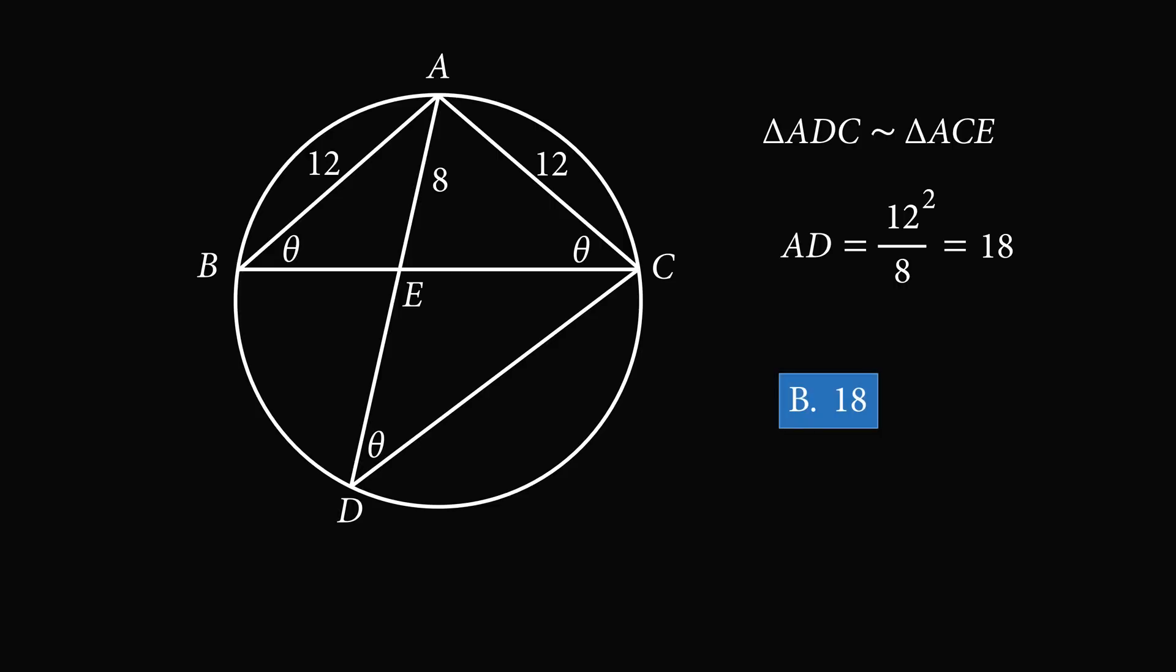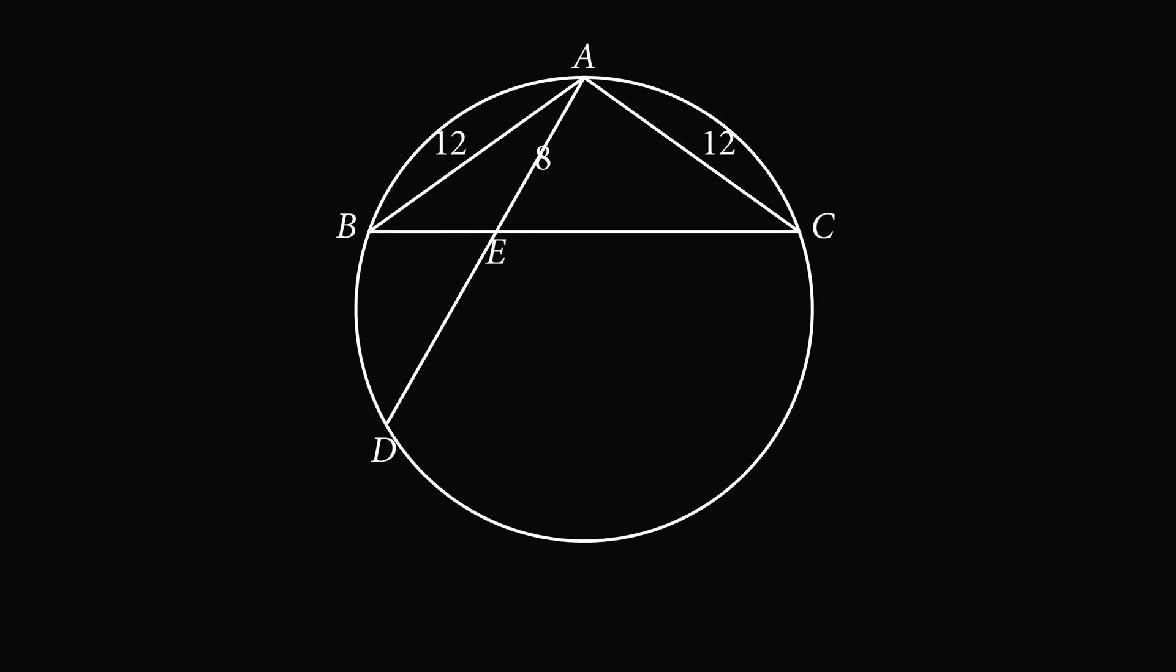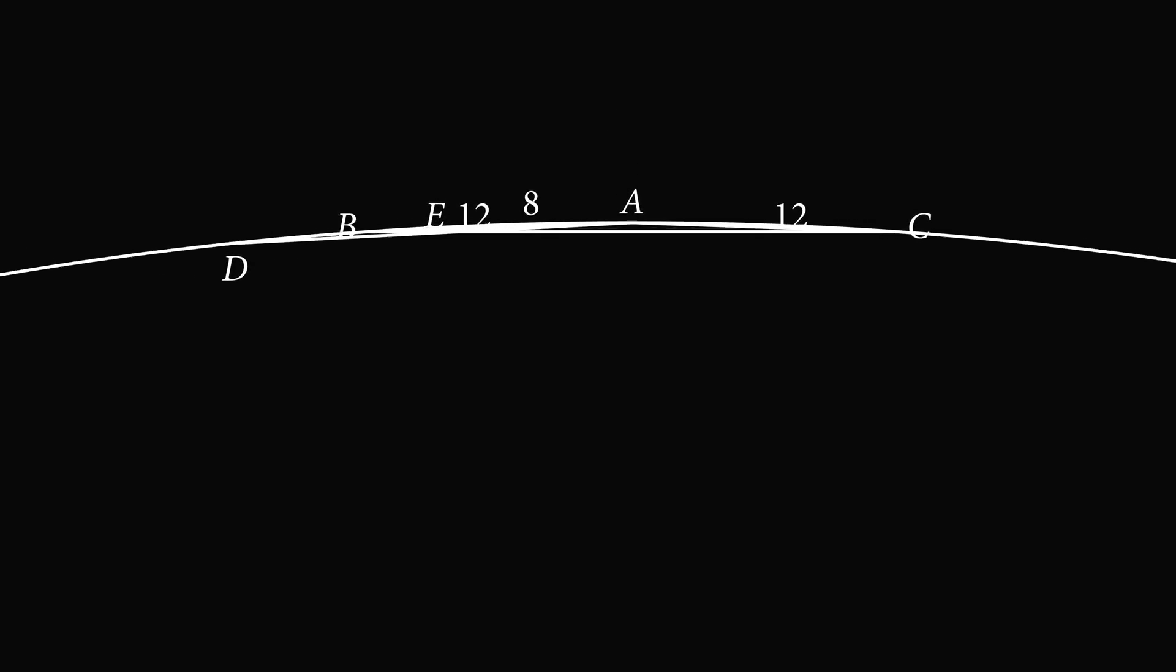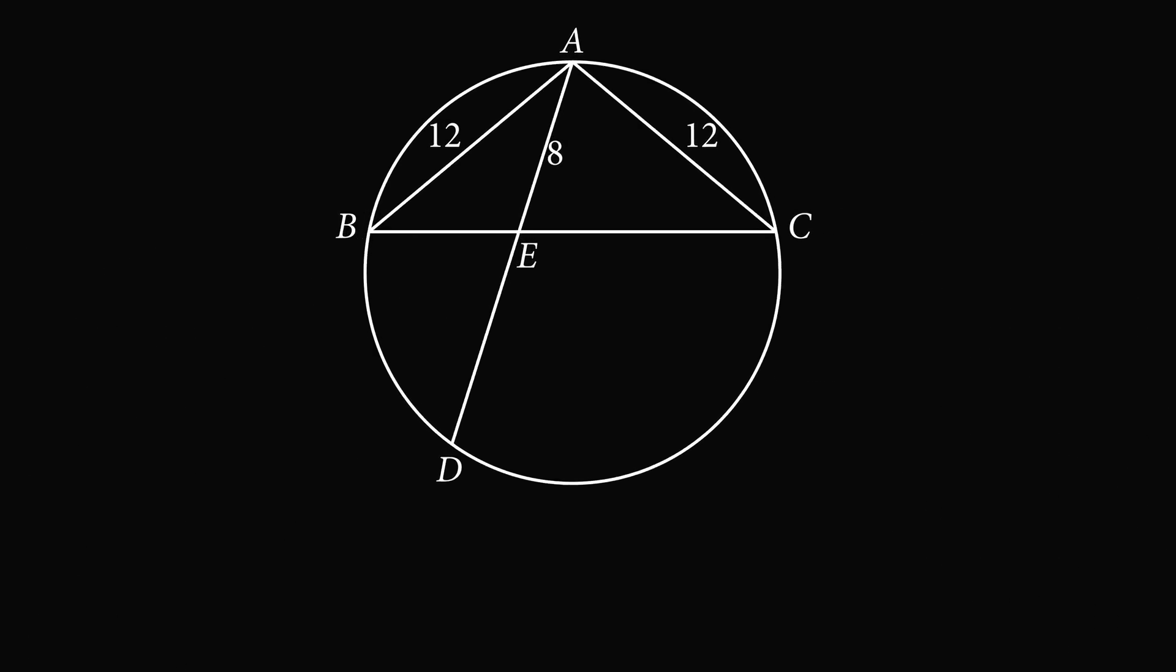Now, there's another interesting footnote to this problem. While we can solve for the length of the chord AD, we cannot solve for the radius of the circle. So it's actually interesting that the length AD is the same in all of these circles, even though the radius of these circles are different.